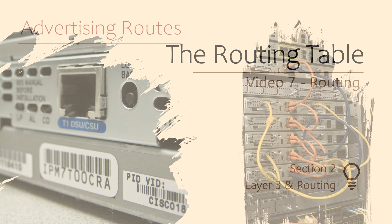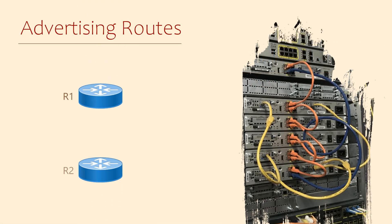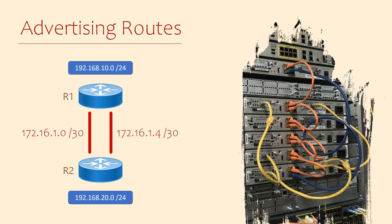Let's go back to network advertisements for a bit. We need to lock in some key concepts. We're going to configure OSPF for the topology shown here. There are two routers connected with two links, and there is an extra network per router.